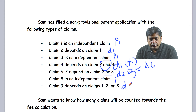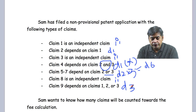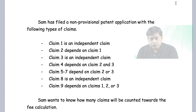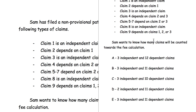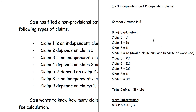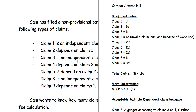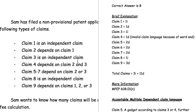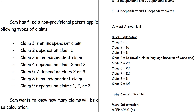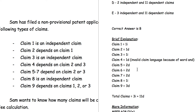That's how I want you to understand this — come up with a table. Here's what I have: Claim 1 is independent. Claim 2 is dependent on 1. Claim 3 is independent. Claim 4 is dependent on 1, but it's a multiple dependent that's invalid. Claims 5, 6, and 7 are each 2 dependent — so 2 times 3 equals 6. Claim 8 is 1 independent. Claim 9 is 3 dependent. The total is 3 independent and 11 dependent.